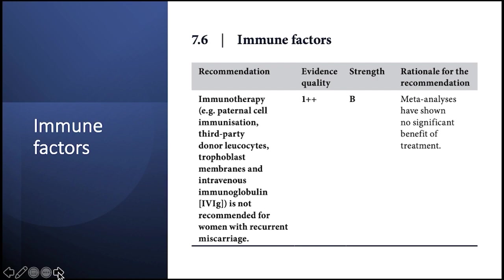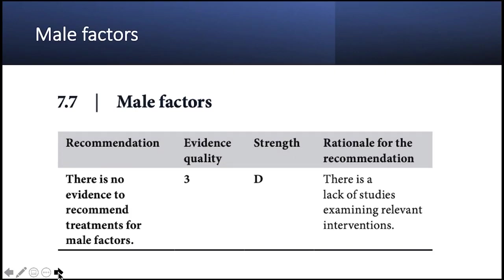Regarding immune factors, immunotherapies — including paternal cell immunization, third-party donor leukocytes, trophoblast membranes, and intravenous immunoglobulin — are not routinely recommended for women with recurrent miscarriages. For male factors, there is no evidence to recommend any treatment unless there is a specific identified issue requiring intervention.